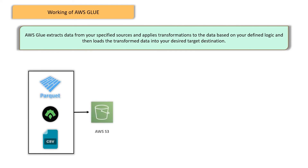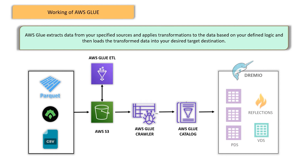Let's take a closer look at how AWS Glue works. When you create an ETL job, AWS Glue leverages scalable ETL tools to process your data efficiently. First, AWS Glue extracts data from your specified sources — which can include databases, data lakes, or streaming platforms. Then it applies transformations based on your defined logic, which could involve filtering, aggregating, joining, or even applying machine learning algorithms. Finally, AWS Glue loads the transformed data into your desired target destination, such as a data warehouse, data lake, or BI tool.